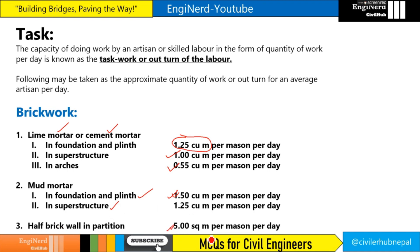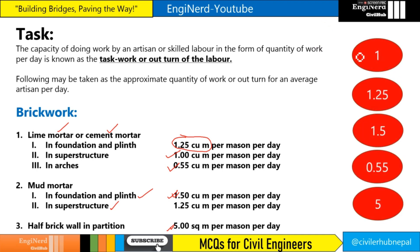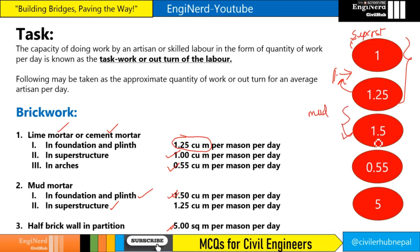For a half brick wall in partition it is 5 square meter per mason per day. To summarize brickwork values: in lime or cement mortar — foundation and plinth is 1.25, superstructure is 1.0, arches is 0.55. In mud mortar — foundation and plinth is 1.5 and superstructure is 1.25. The maximum outturn is 1.5 for mud mortar in foundation and plinth.